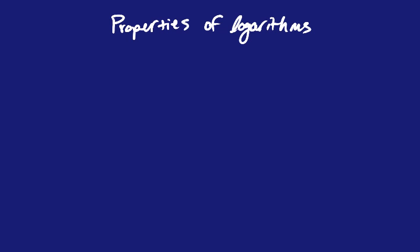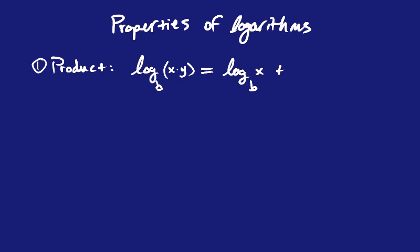Let me give you three of them. They are called the product property, which I call the first one. When you see the logarithm of any base and there's two things being multiplied on the inside, x times y, or three or four or five, you can expand them and break them up to become the log base b of x plus the log base b of y.